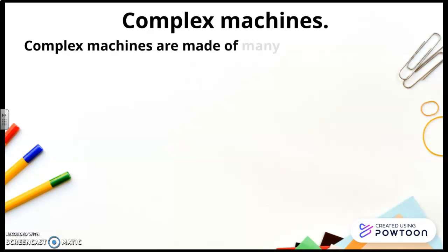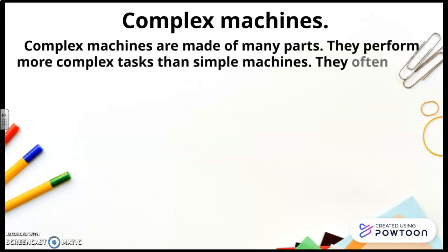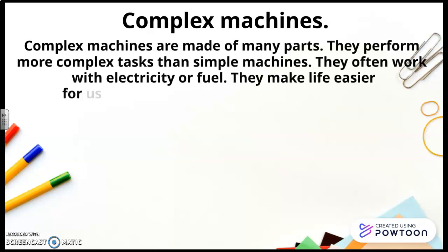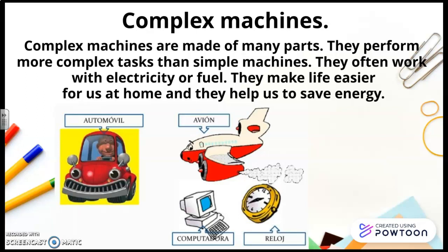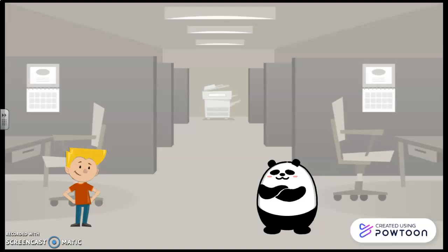Complex machines. Complex machines are made of many parts. They perform more complex tasks than simple machines. They often work with electricity or fuel. They make life easier for us at home and they help us to save energy. And here are the examples. Car, plane.